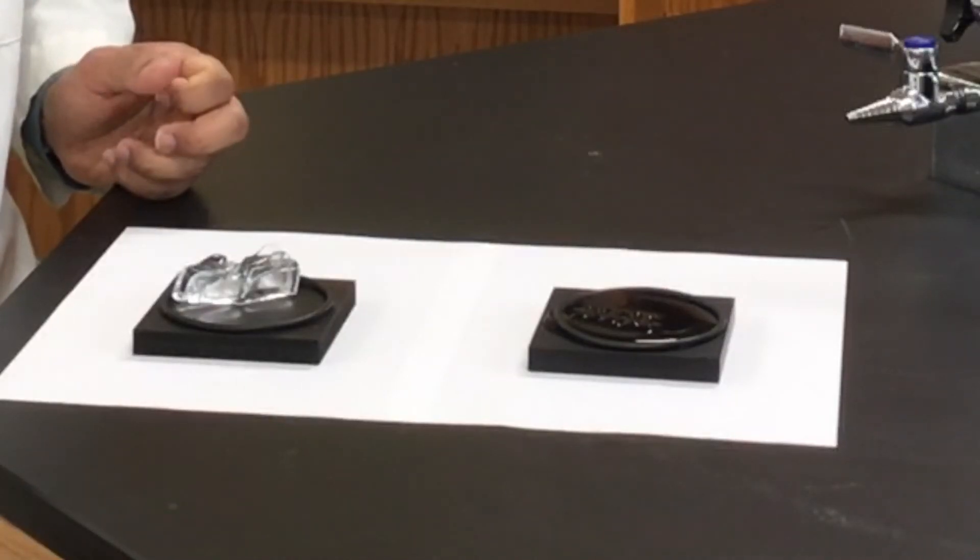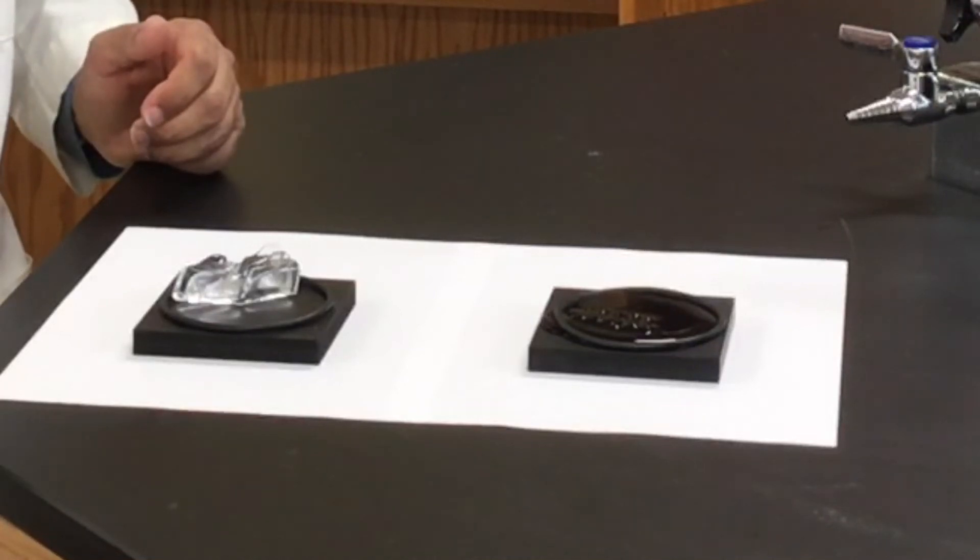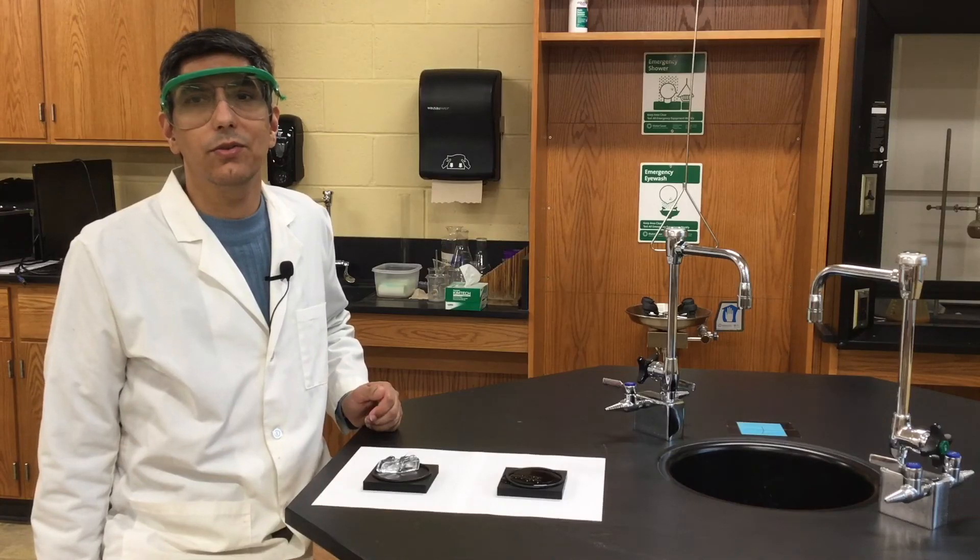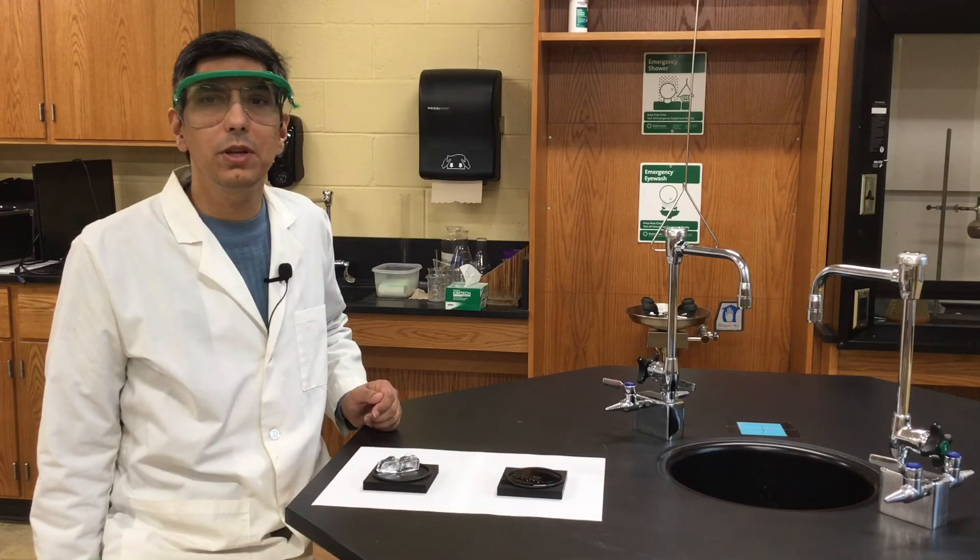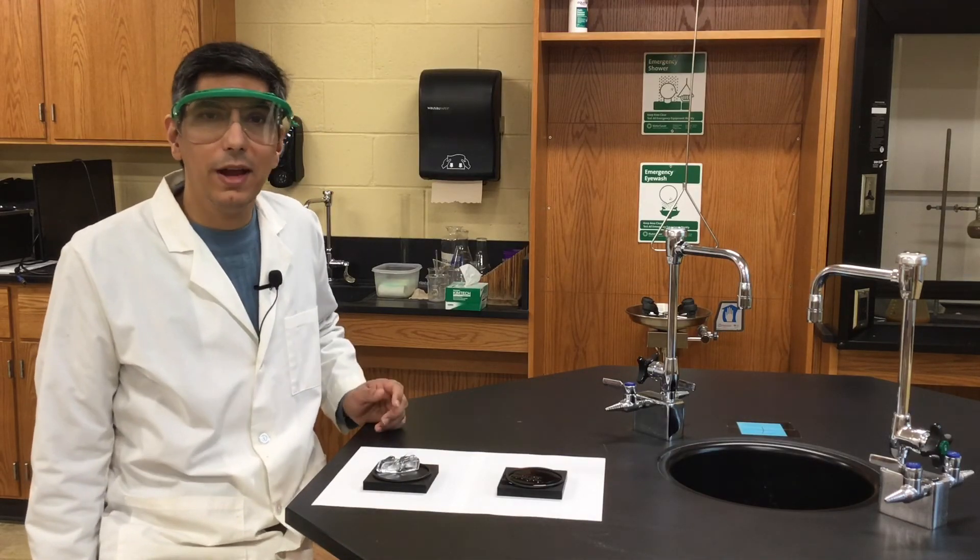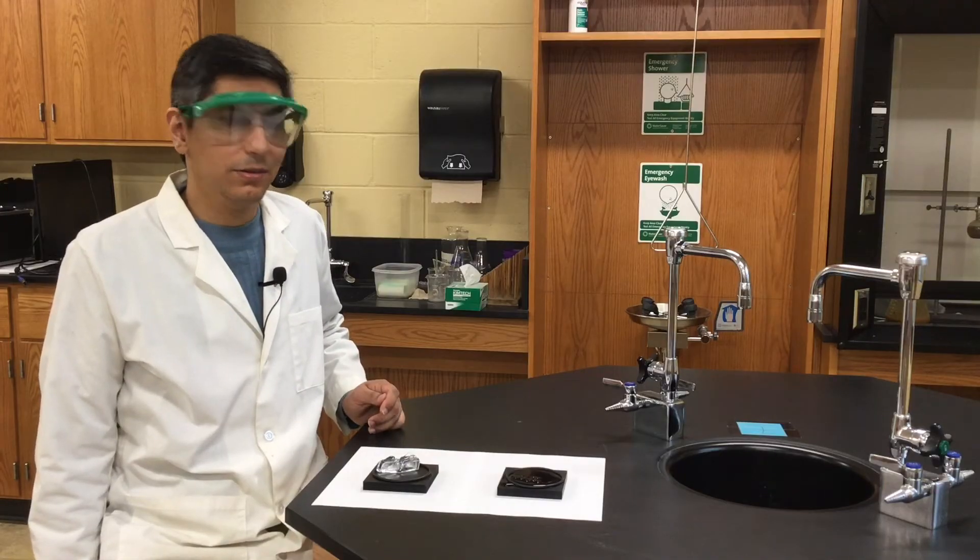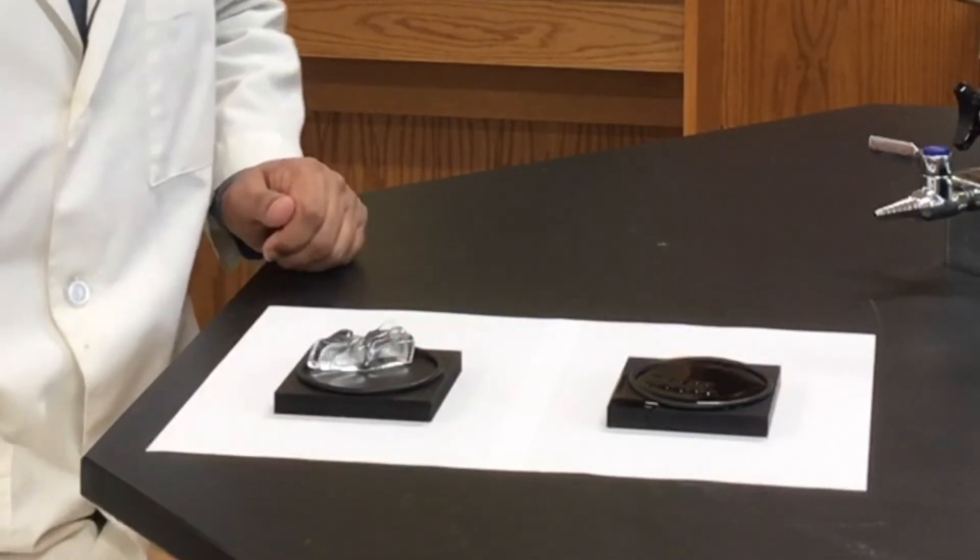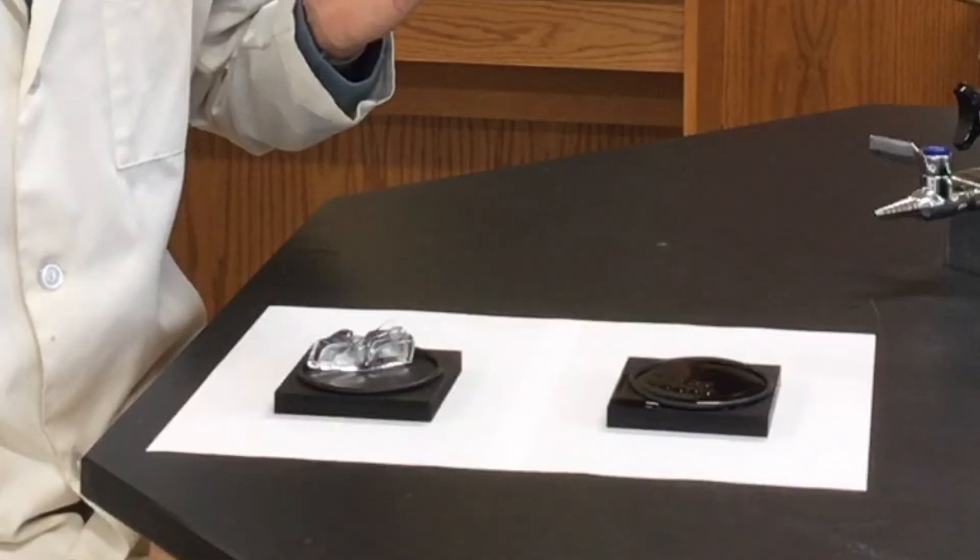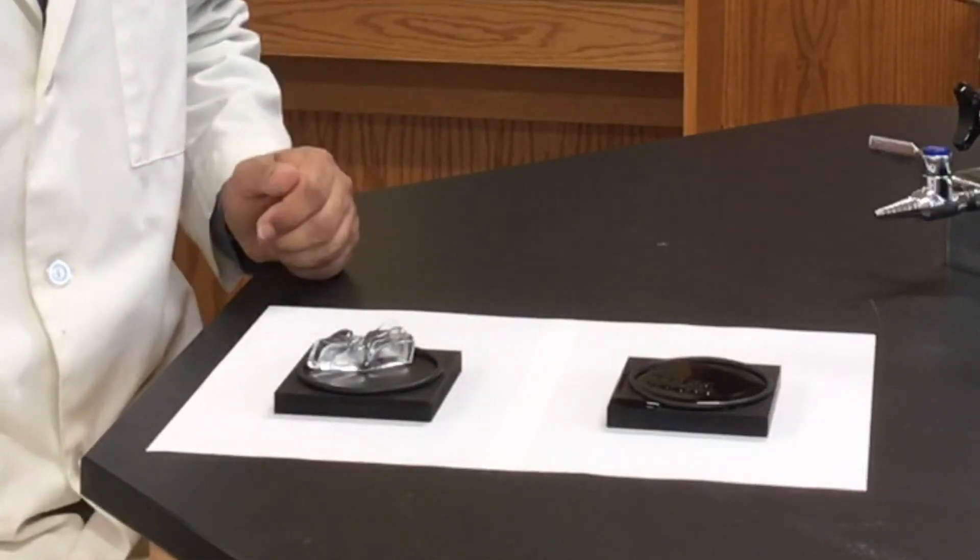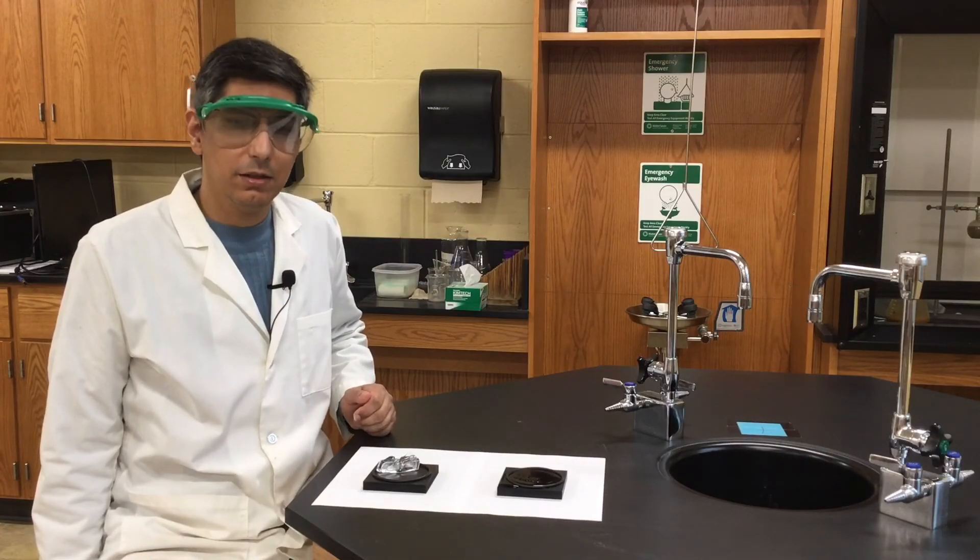Now, you can use this to your benefit. You can buy these devices that are sometimes called a magic defrosting tray. So, if you have frozen meat or some other frozen food, you can place it on this magic tray, and it will defrost faster. Well, it's not magic at all. It's aluminum. They just take advantage of the low specific heat capacity of that particular metal.